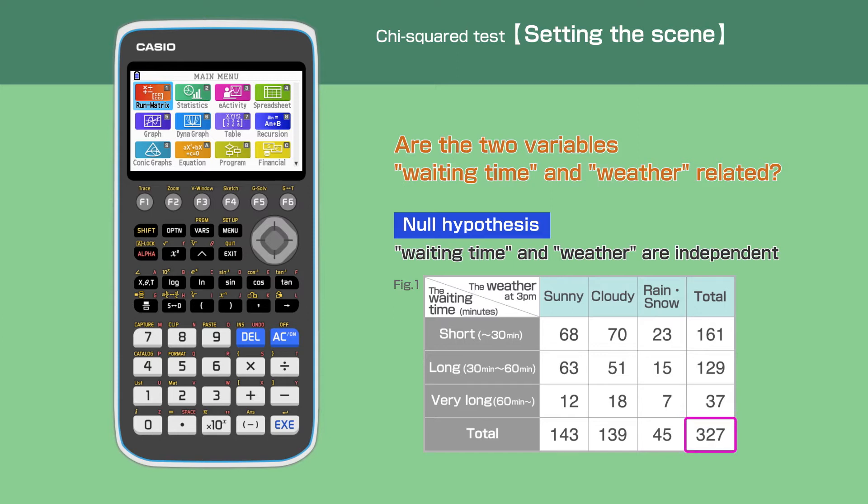The organized data is shown in a table. Our null hypothesis is that waiting time and weather are independent. Alternative hypothesis is that waiting time and weather are not independent. Our degree of freedom is 4 and the significance level is 5%.